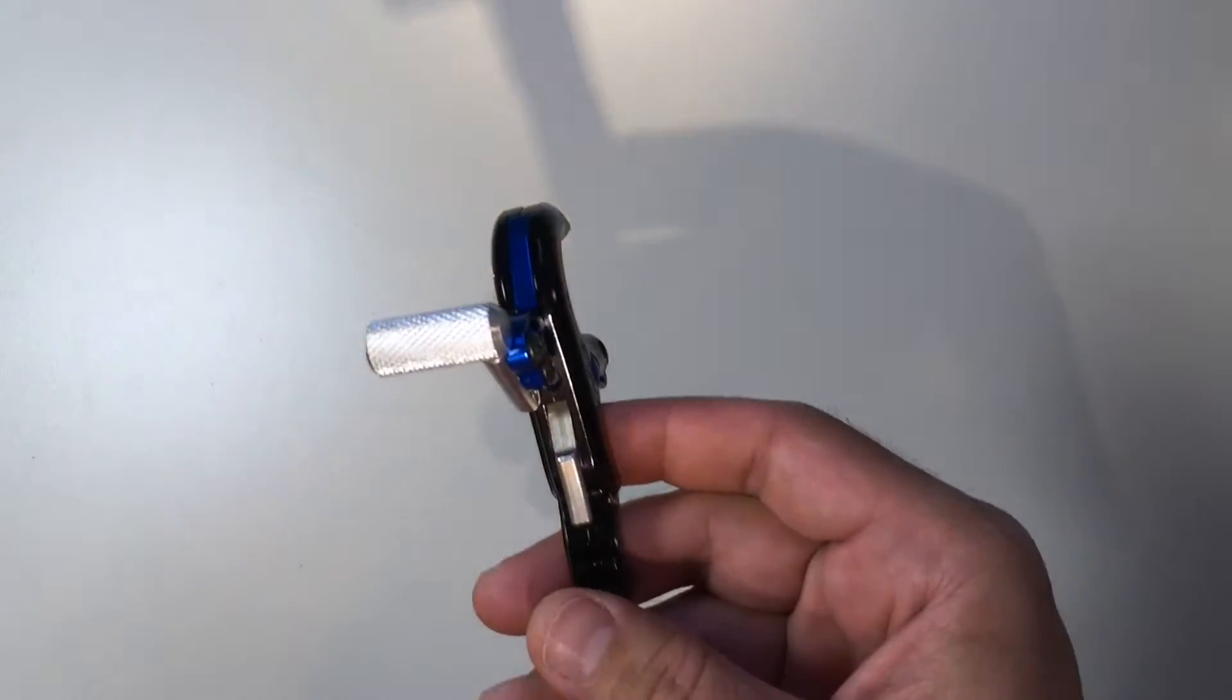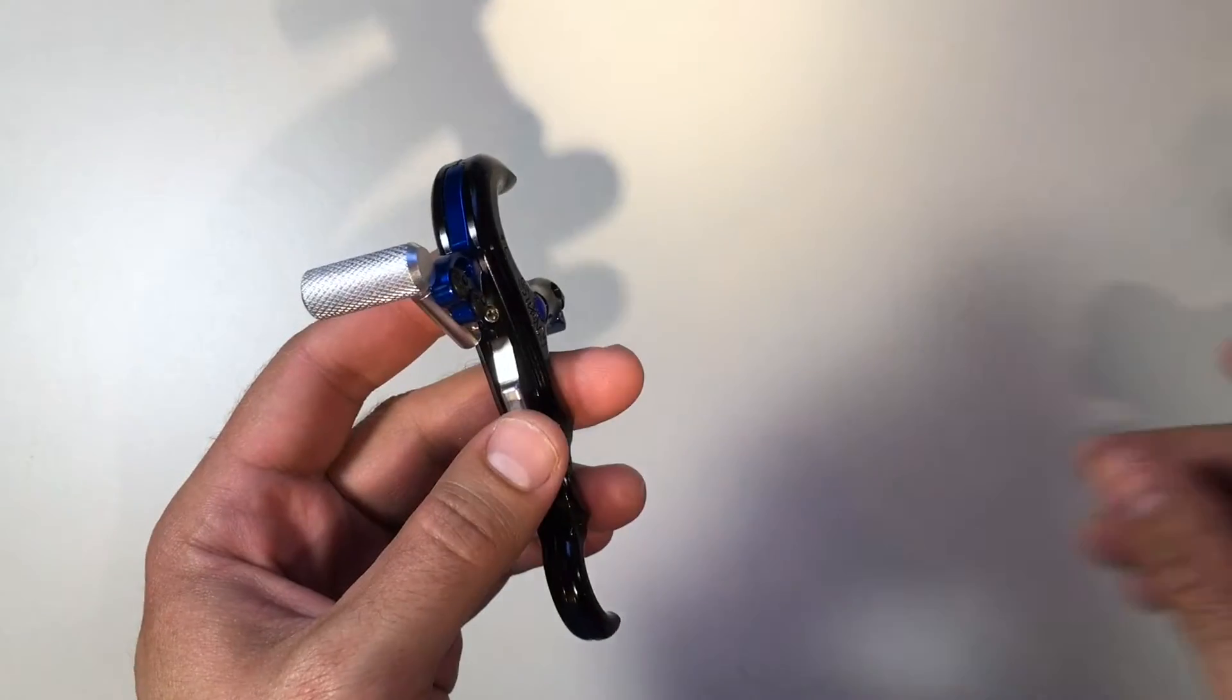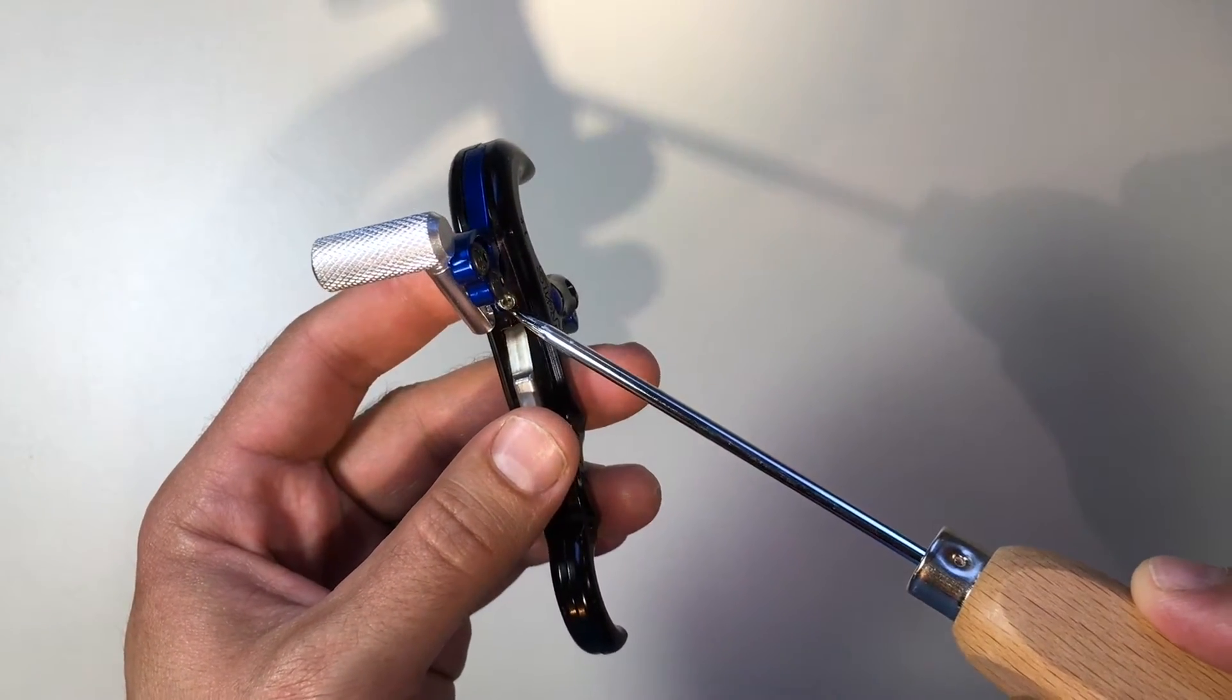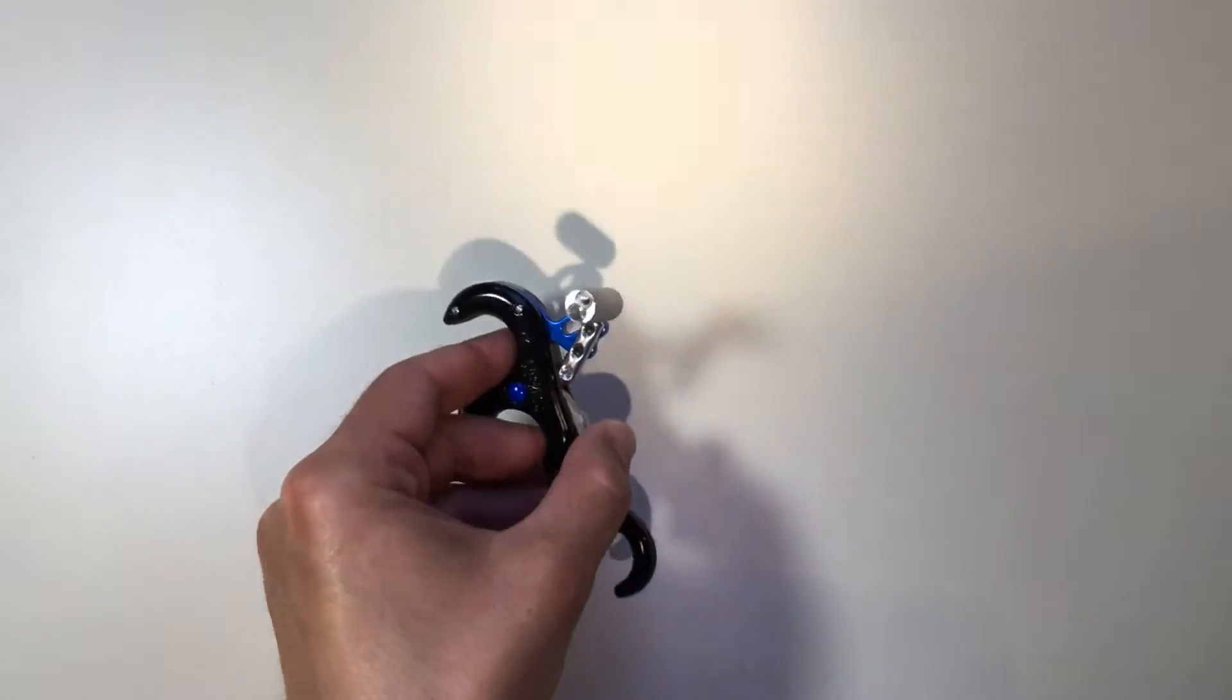You can adjust the trigger tension by turning this allen head screw right behind the trigger. I forgot to point out in the video that there's a trigger travel screw also on the top of the release that you can adjust.